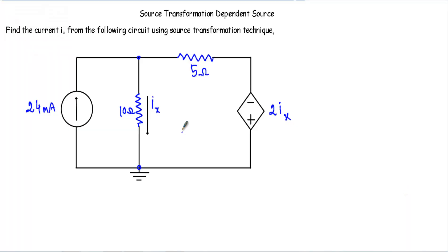In this video I will show you a circuit example in which we have to apply the source transformation technique. The circuit will contain a dependent source. Find the current ix from the following circuit using source transformation technique. This is our circuit and the current through this 10 ohm resistor is our ix. The circuit contains a current dependent voltage source.